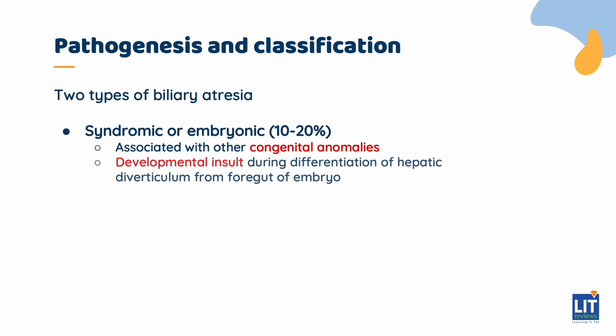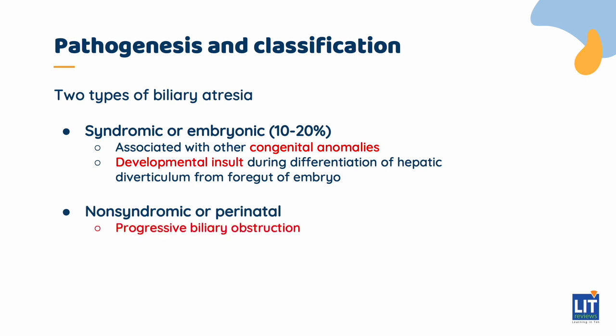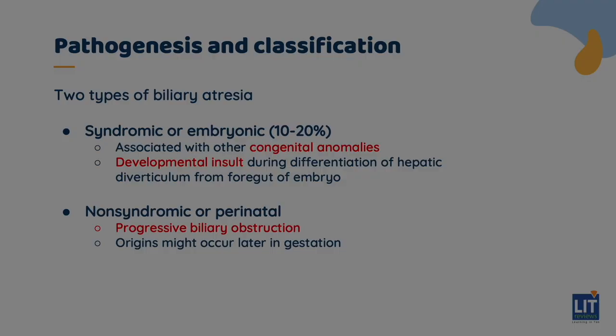The other type of biliary atresia is called non-syndromic or perinatal. This is characterized by progressive biliary obstruction, and the origin of this type is thought to occur later in gestation.